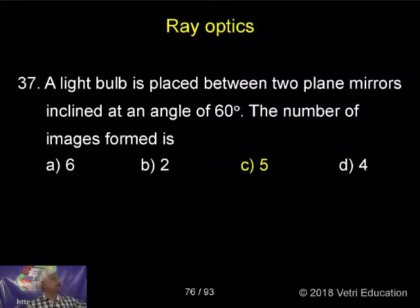Here a light bulb is placed between two plane mirrors inclined at an angle of 60 degrees. So how many images are formed? First we have to find 360 by 60.